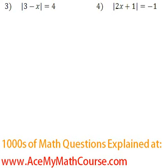And here we have more absolute value equations. Let's start with number 3. The absolute value of 3 minus x is equal to 4.